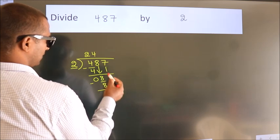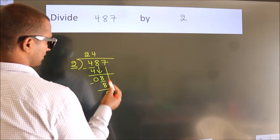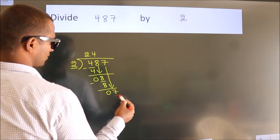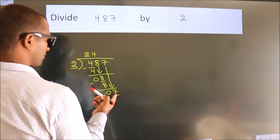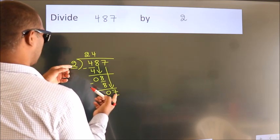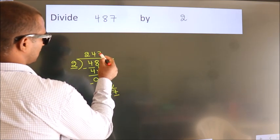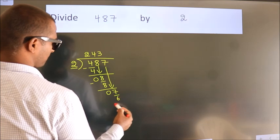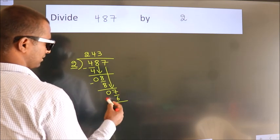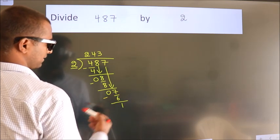After this, bring down the beside number. So, 7 down. So, 7. A number close to 7 in 2 table is 2 3's, 6. Now, we subtract. We get 1.